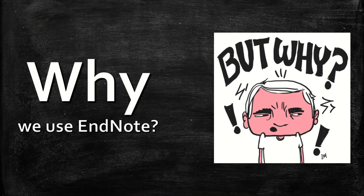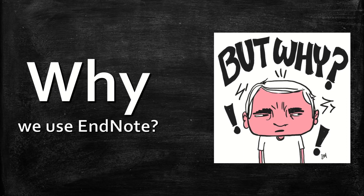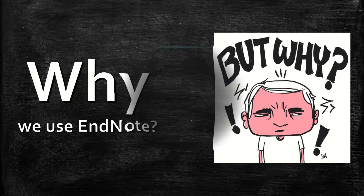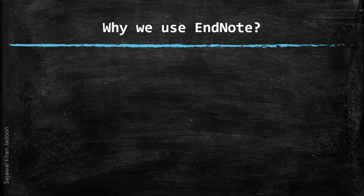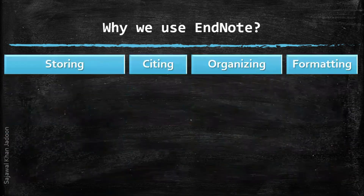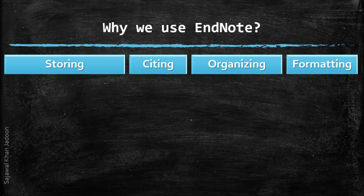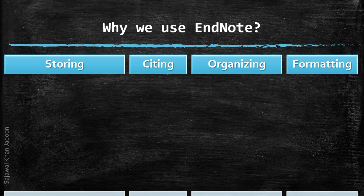Why we use EndNote: EndNote has four main functions. First, storing. Second, citing. Third, organizing. And fourth, formatting.